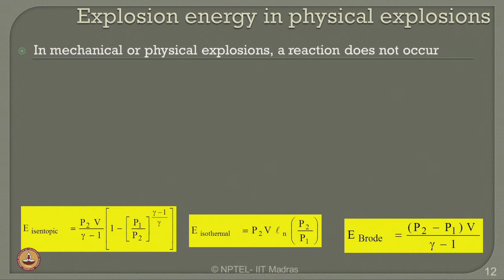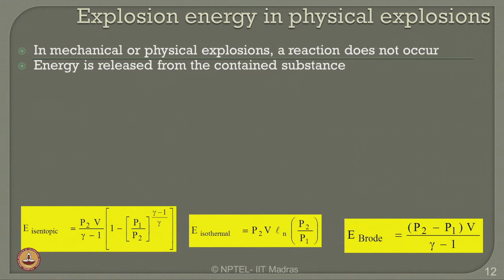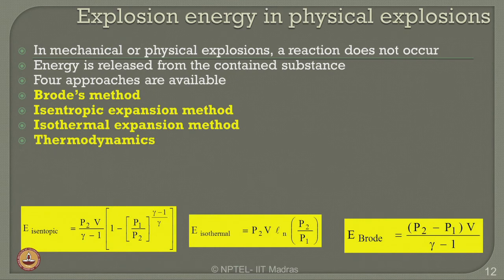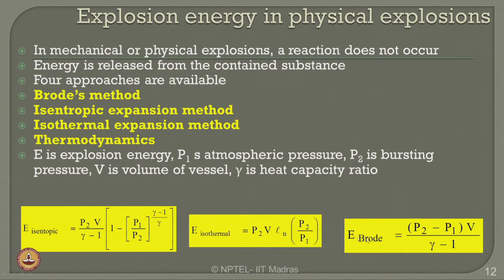Exposed energy can also arise from physical explosions. In mechanical or physical explosions, a reaction does not occur as in chemical reactions; energy is released directly from the contained substance. There are four approaches available: Brod's method, isentropic expansion method, isothermal expansion method, and thermodynamics law. These corresponding equations can be used for finding out the energy released because of physical explosions.